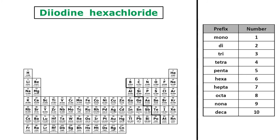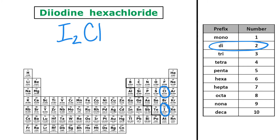Next we have diiodine hexachloride. I've got iodine, symbol I, and the prefix di tells me that there are two. And then I have hexachloride, so that means I need to use the symbol Cl, and hexa is six. So the formula for diiodine hexachloride is I2Cl6.